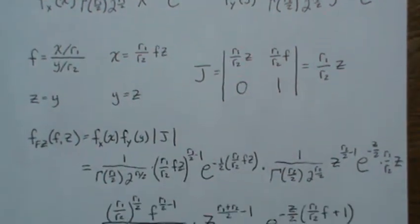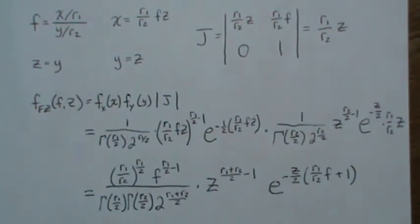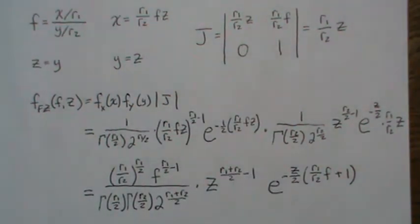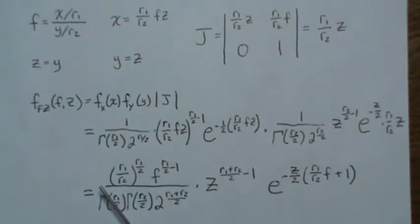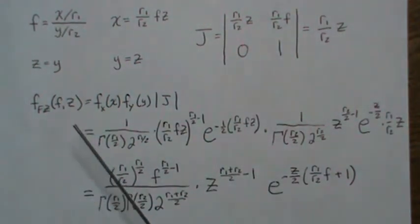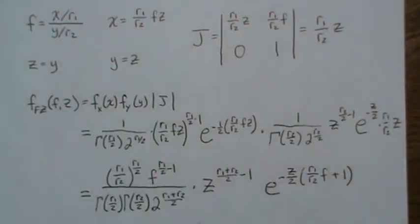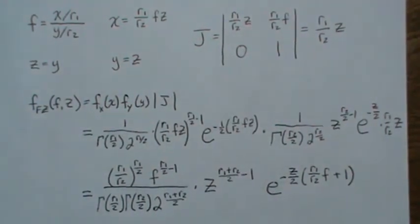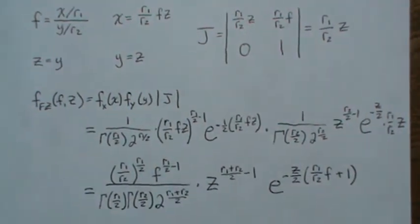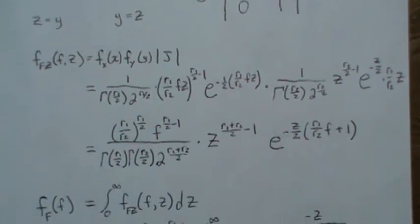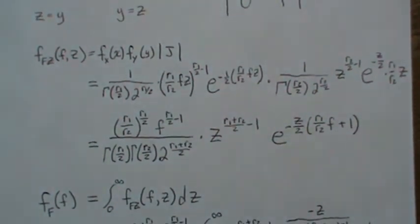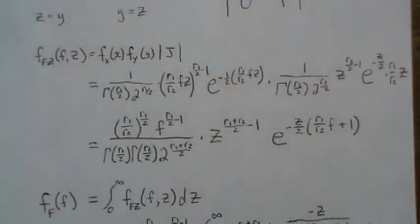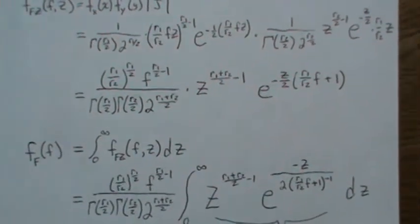We collect like terms and simplify. All the non-z terms are grouped on one side, and anything involving z is placed on the other side, because we're getting ready to integrate out z to obtain the marginal density of f. So we integrate out z.